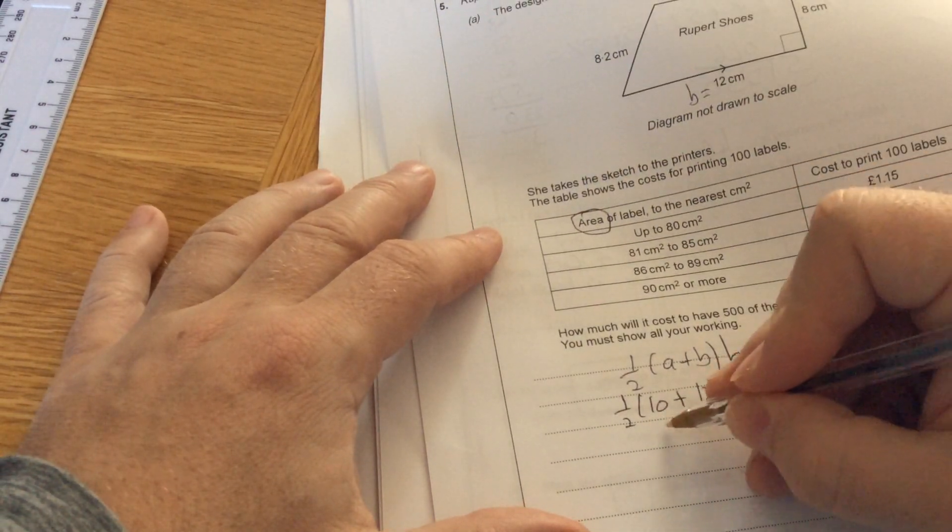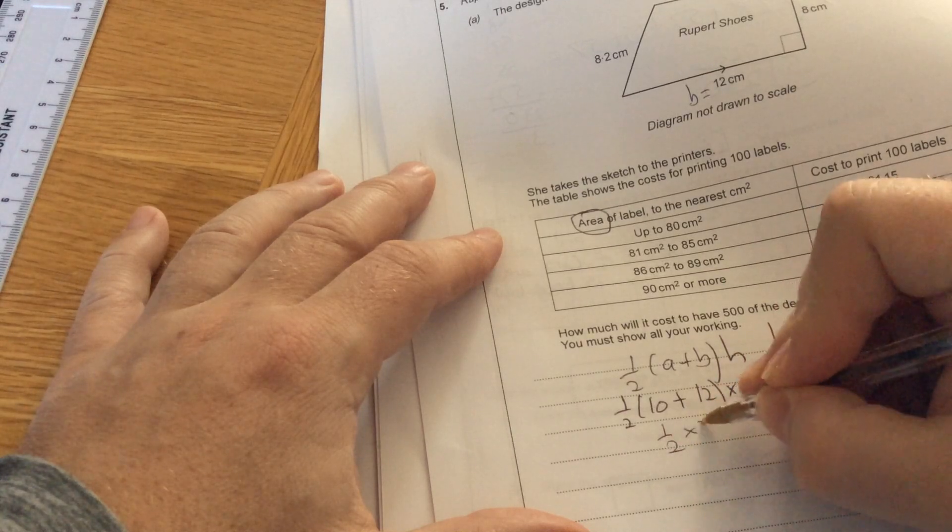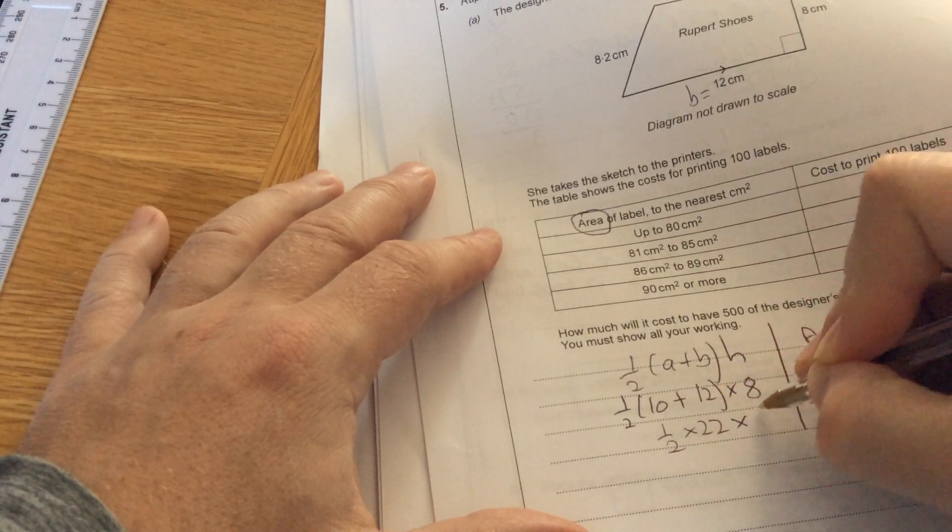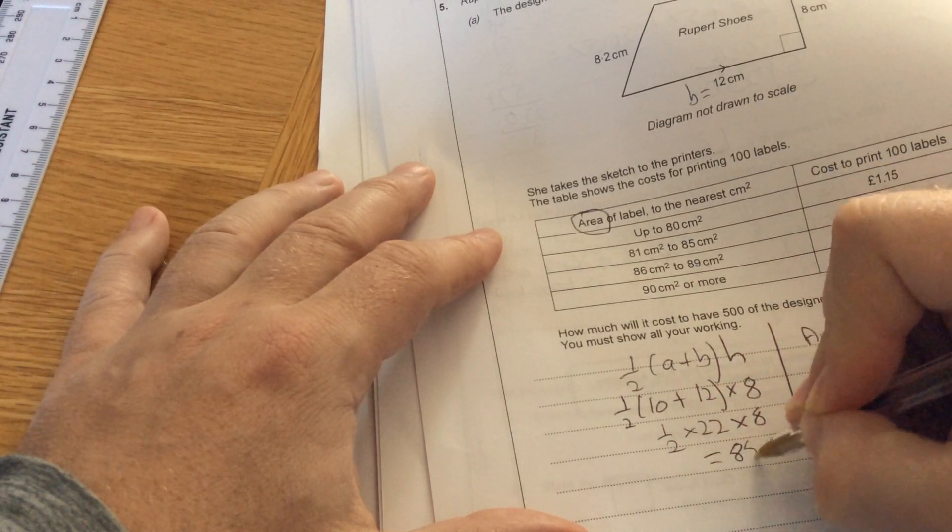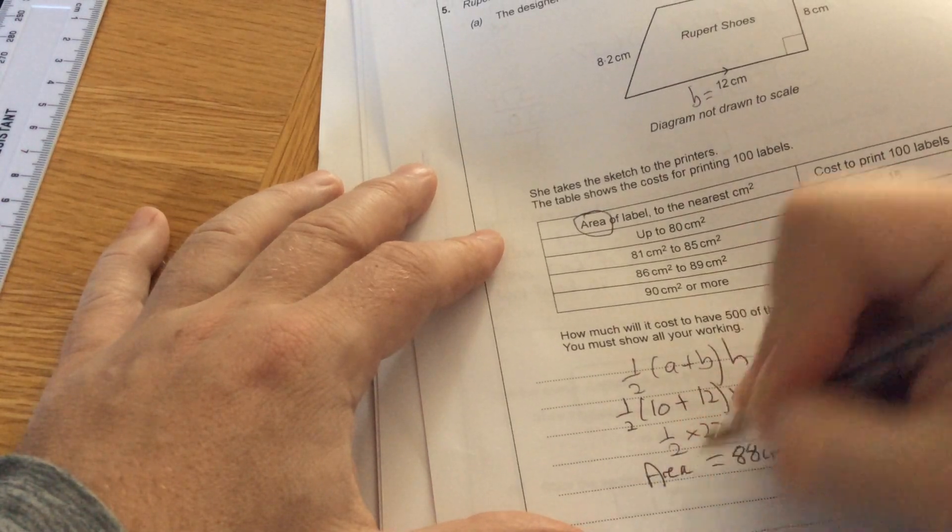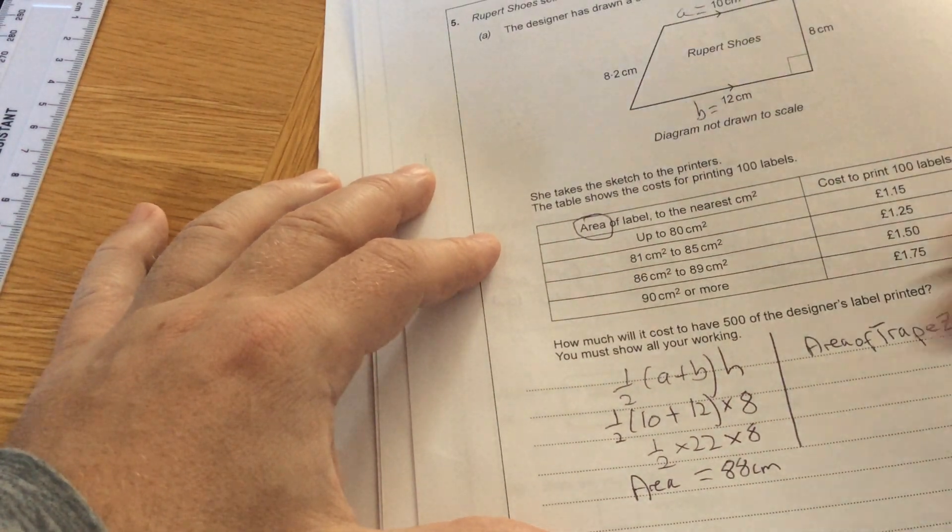So 10 add 12 is 22. I've got half of 22, which is 11. 11 times 8 is 88 centimeters squared. So the area is 88 centimeters squared.